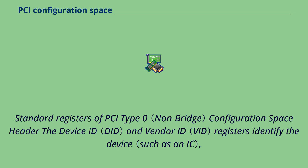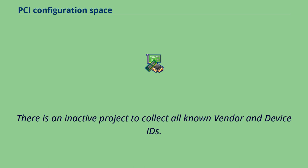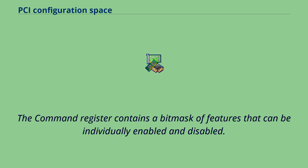Standard registers of PCI Type 0 configuration space header: the device ID and vendor ID registers identify the device and are commonly called the PCI ID. The 16-bit vendor ID is allocated by the PCI SIG, and the 16-bit device ID is then assigned by the vendor. There is an inactive project to collect all known vendor and device IDs. The status register reports which features are supported and whether certain kinds of errors have occurred.